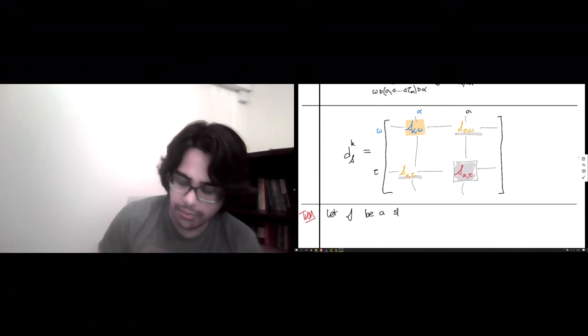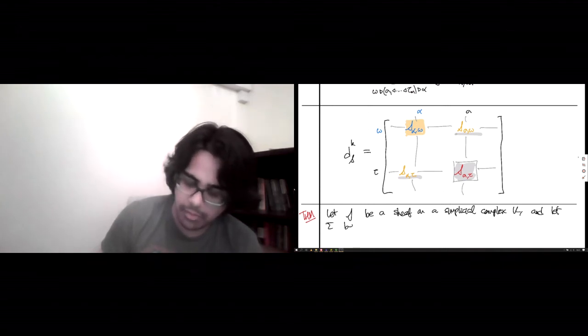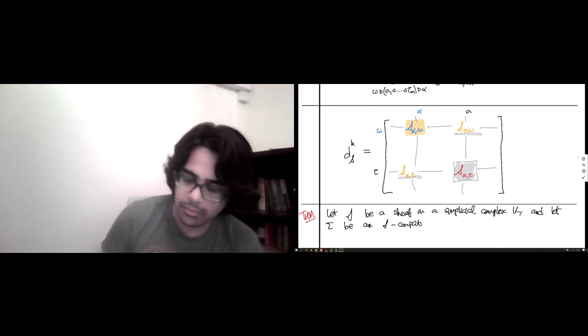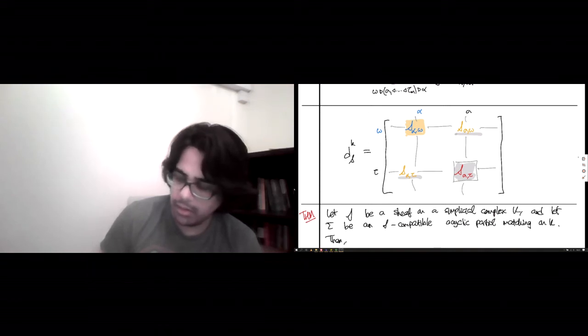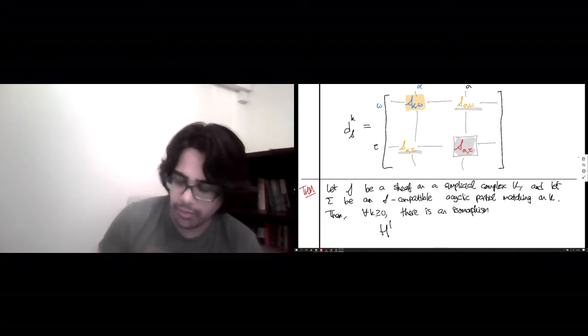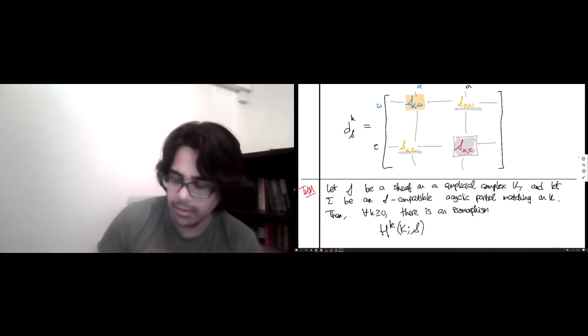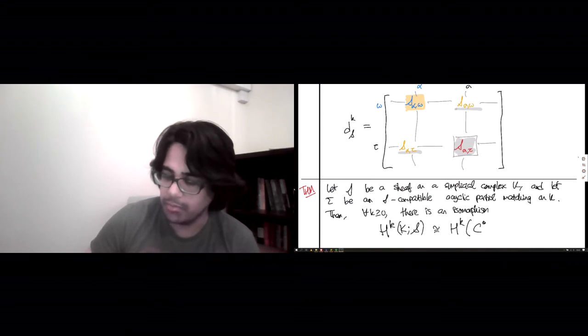So if you put all of this together, here's the main theorem. Let S be a sheaf on a simplicial complex K, and let sigma be an S-compatible acyclic partial matching on K. Then, for every K bigger than zero, there is an isomorphism. So on the one side, you have the sheaf cohomology of K with coefficients in S. And on the right side, you have the cohomology of this Morse co-chain complex that we just defined upstairs, S-sigma.